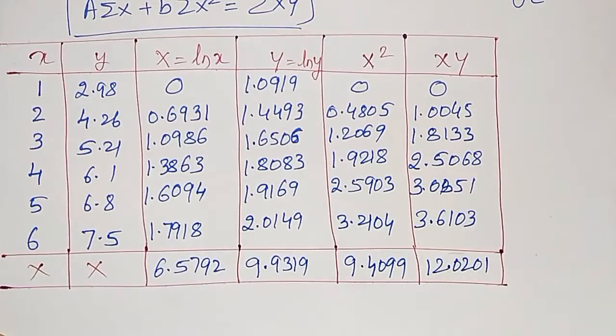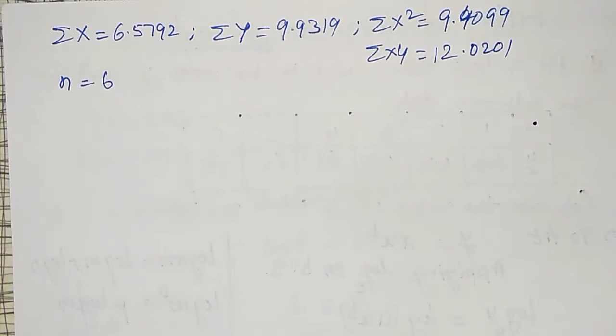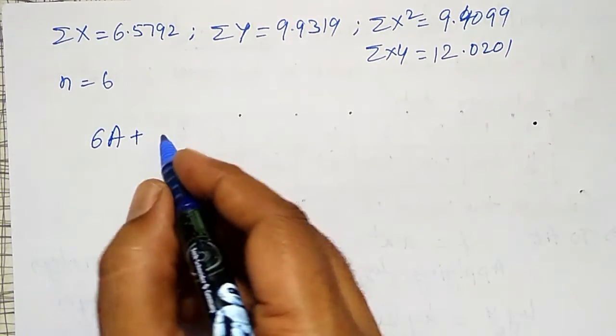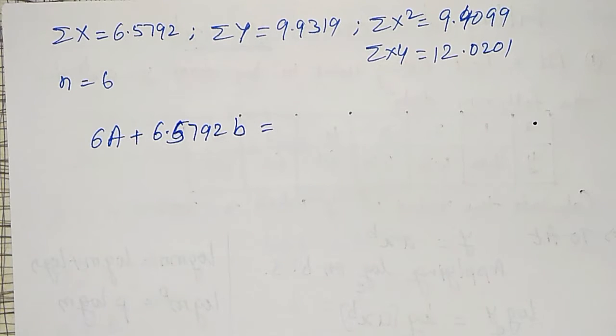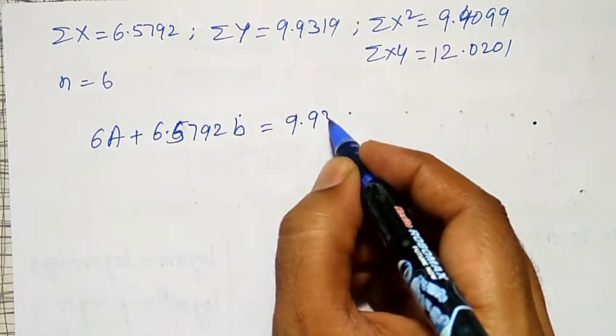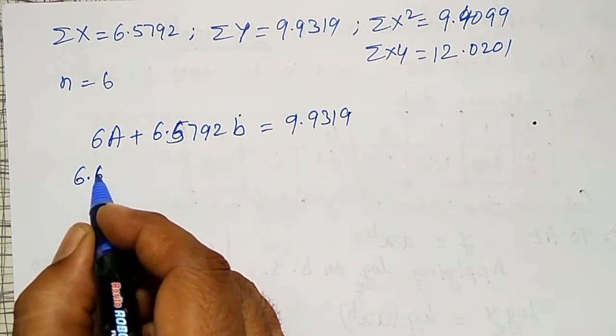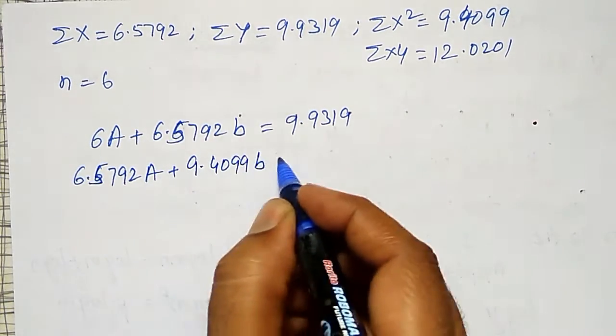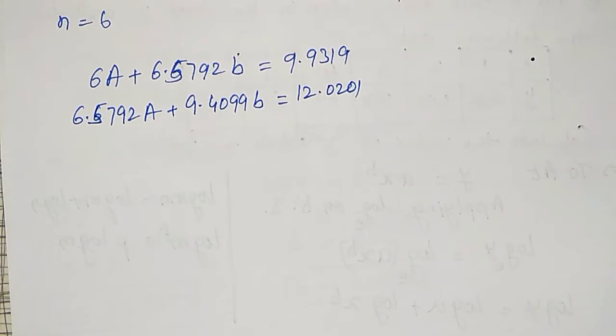Using these summations of x and y, capital X, all these things in the normal equations, I will calculate capital A and small b. Substituting all these summations in the normal equations, that is n into capital A. My n is 6, 6 observations are there. 6A plus small b into summation x, summation x is 6.5792 into small b, equal to summation y, that is 9.9319. To get the second equation, summation x into A, that is 6.5792 into capital A plus summation x square 9.4099 into small b equal to xy, 12.0201.